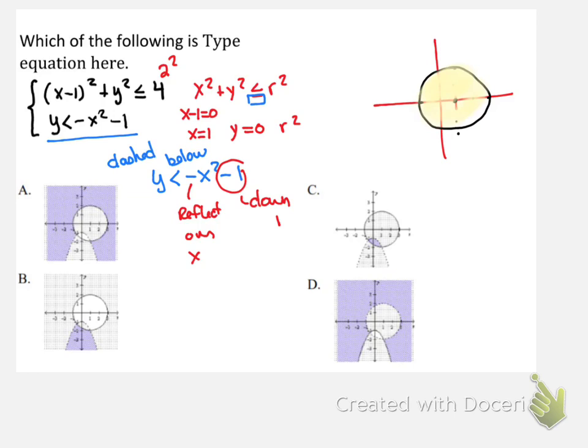And so as I look at that, it looks like pretty much all of these are correct, it's just which one is shaded right. And so I need to shade below, so it could be this one, and this one, because they're shaded below.